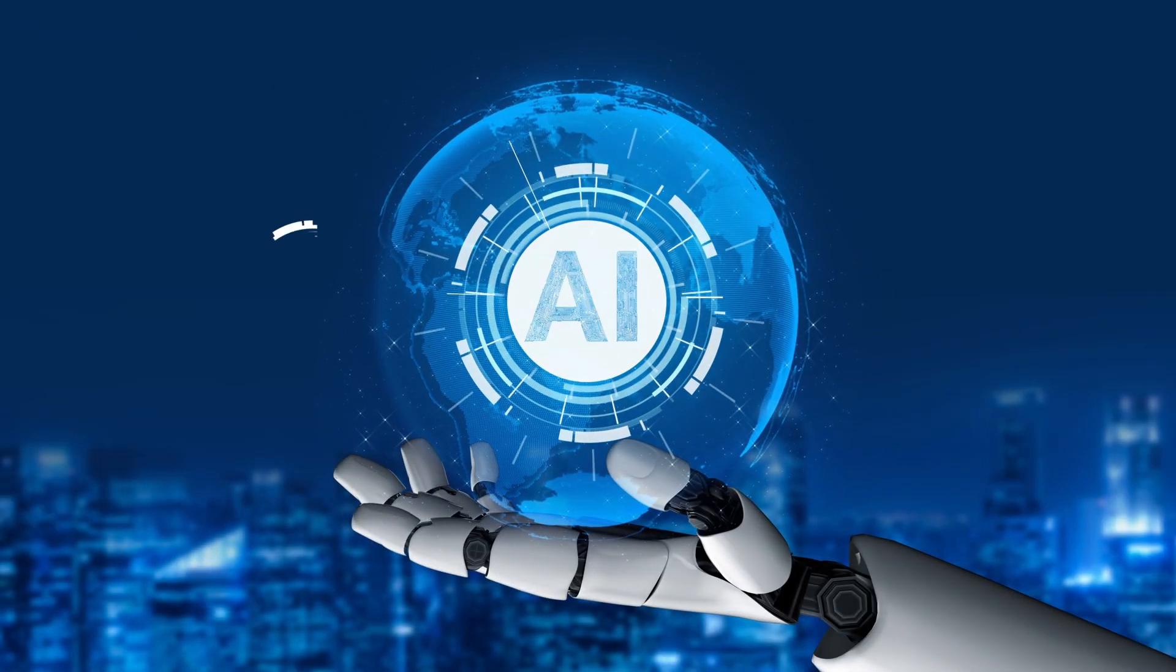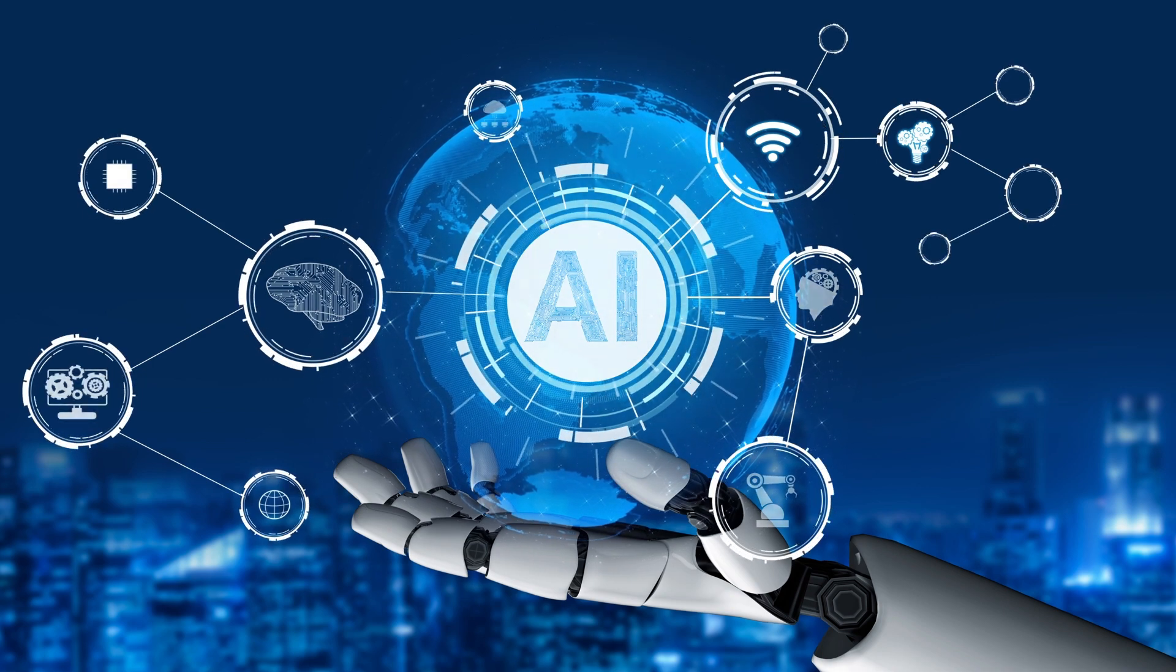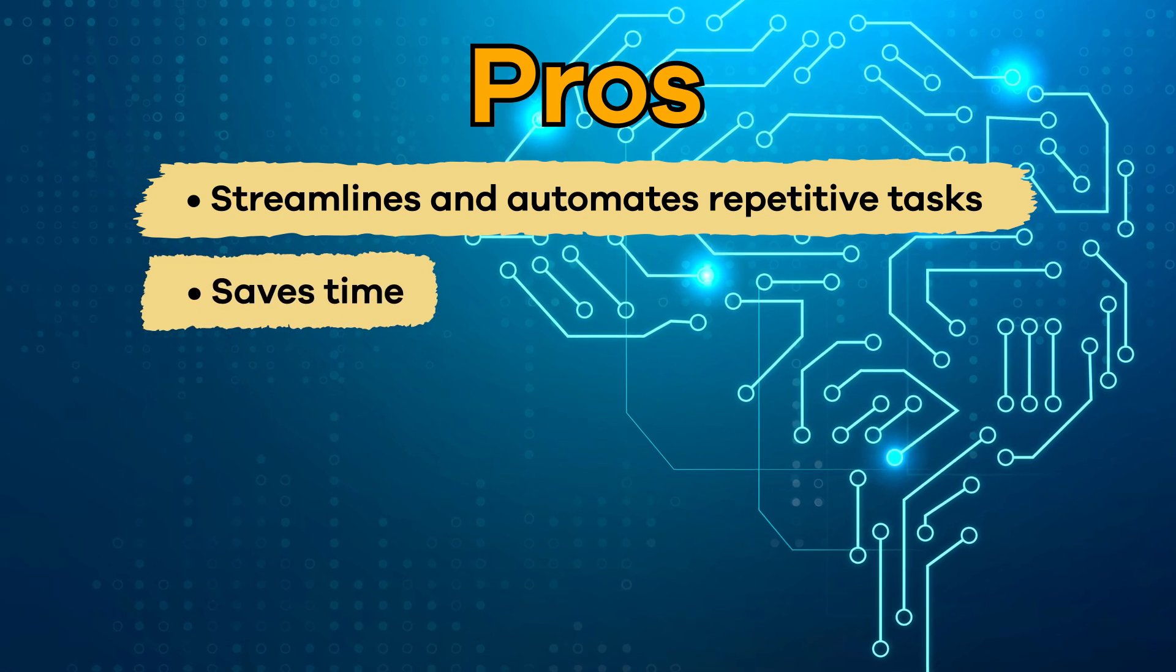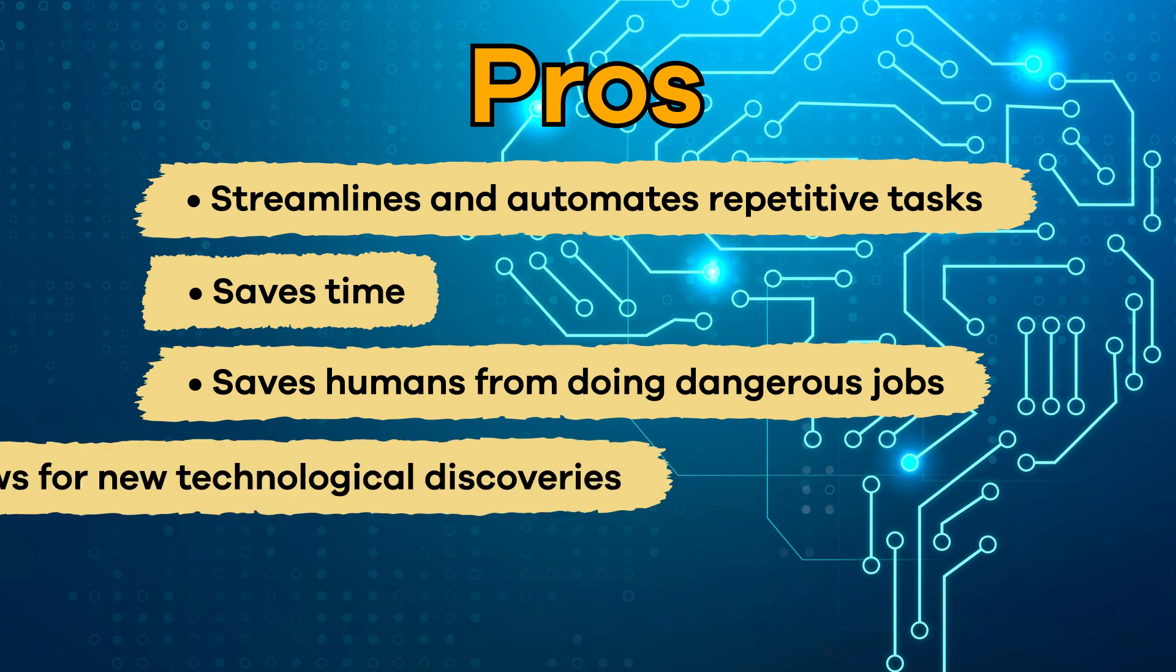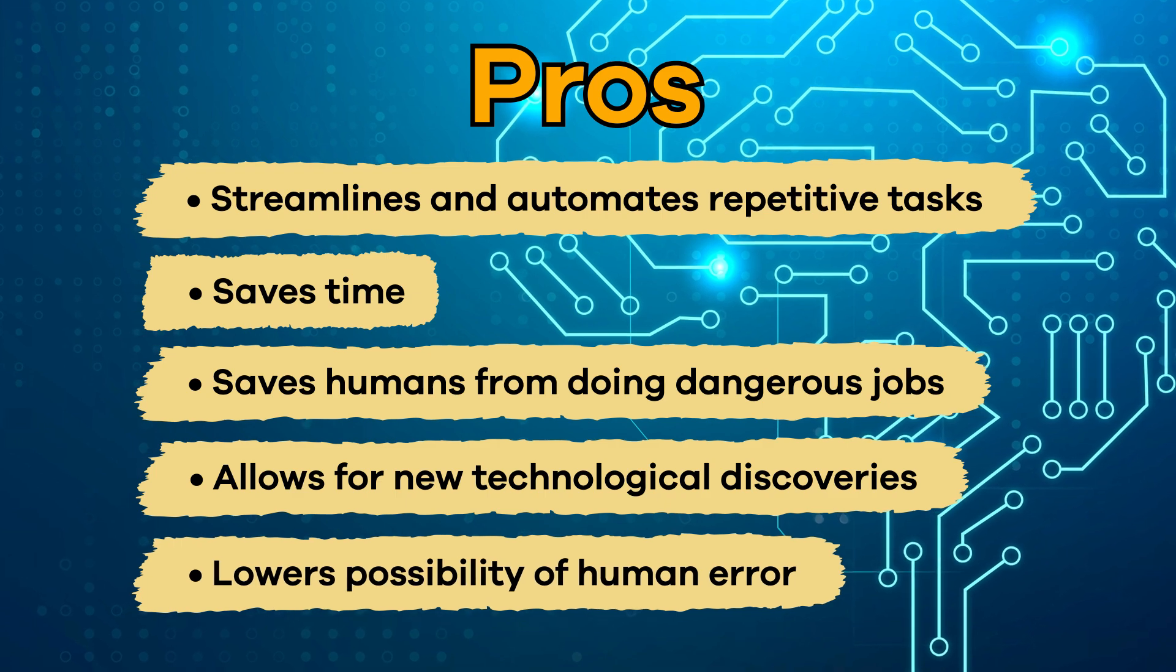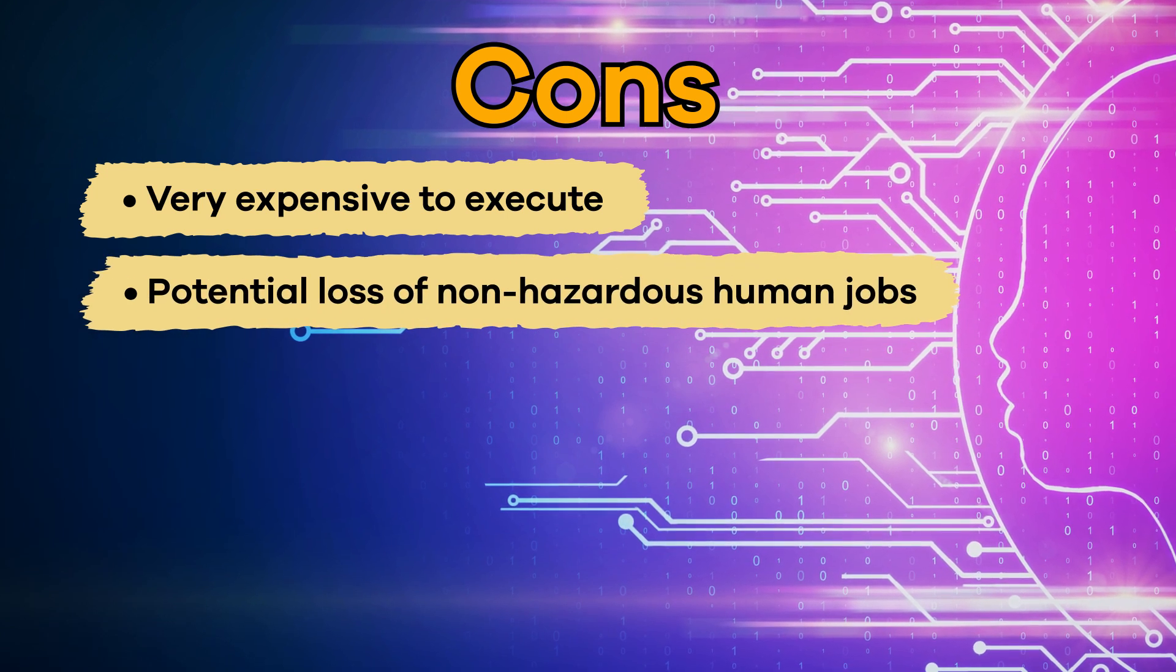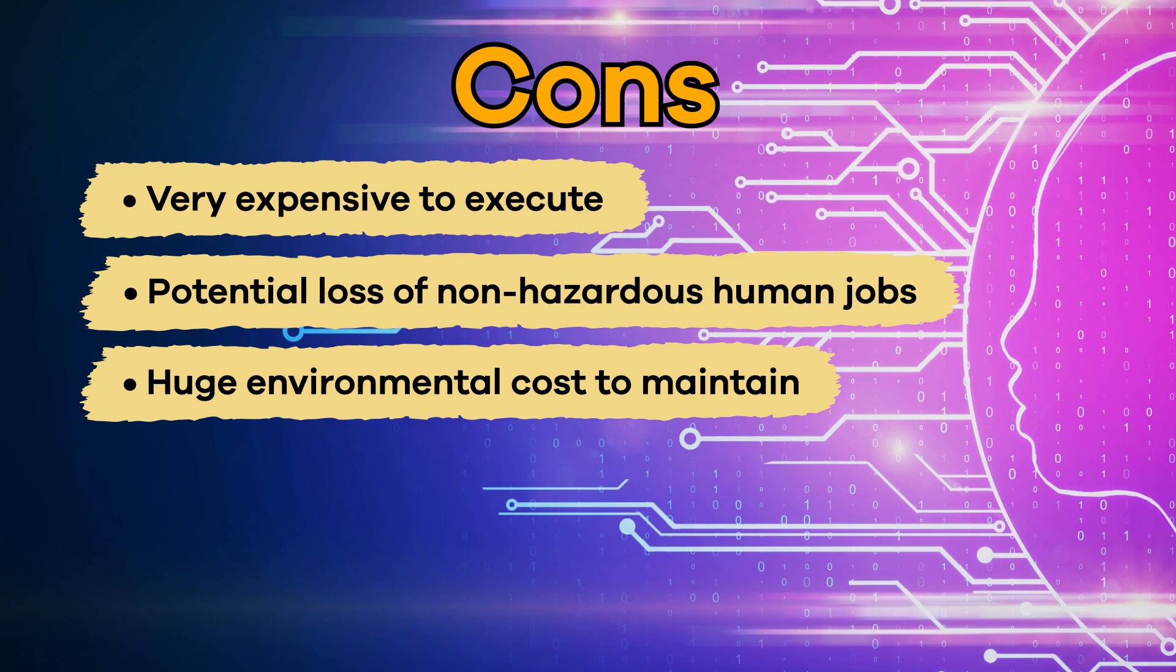Now that we are more aware of what AI is, let's discuss some pros and cons of its use. Pros: streamlines and automates repetitive tasks, saves time, saves humans from doing dangerous jobs, allows for new technological discoveries, lowers possibility of human error. Cons: very expensive to execute, potential loss of non-hazardous human jobs, huge environmental costs to maintain, can be used to plagiarize art and other online content, security risks from hackers.